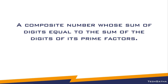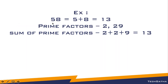For example, 58: the sum of individual digits is 5 plus 8, which is 13. The prime factors of 58 are 2 and 29. We find the sum of the prime factors, but if a prime factor is greater than 9, we find the sum of its individual digits and add it to the previous prime factor sum.